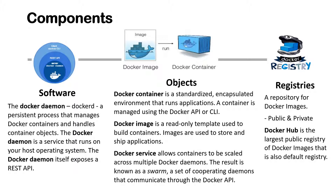Regarding software, we should consider the Docker daemon, called dockerd. This is a persistent process that manages Docker containers and container objects. The Docker daemon is a service that runs on your host operating system, and it exposes a REST API. The next component is objects. The main classes of Docker objects are images, containers, and services.